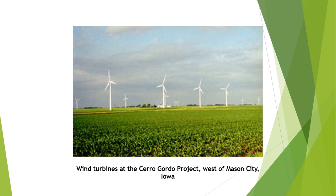This is an example of the installation of wind turbines. These windmills have been installed at the Carogordo project, west of Mashton City, Iowa.